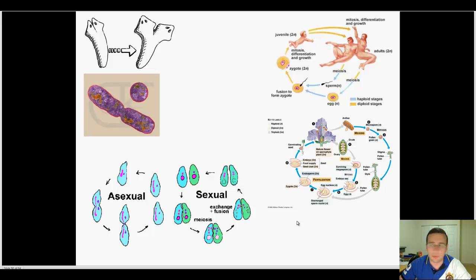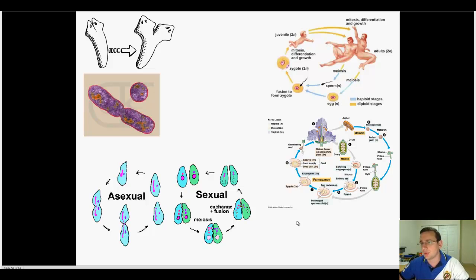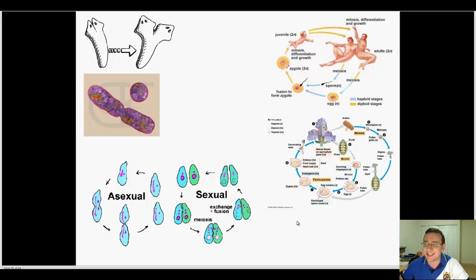In another video we talked about examples of asexual reproduction. The opposite is sexual reproduction — and while everyone thinks about mating, life is full of other examples of sexual reproduction and complex mechanisms of genetic exchange and recombination, which is basically what characterizes sexual reproduction. Let's talk about some of these methods.